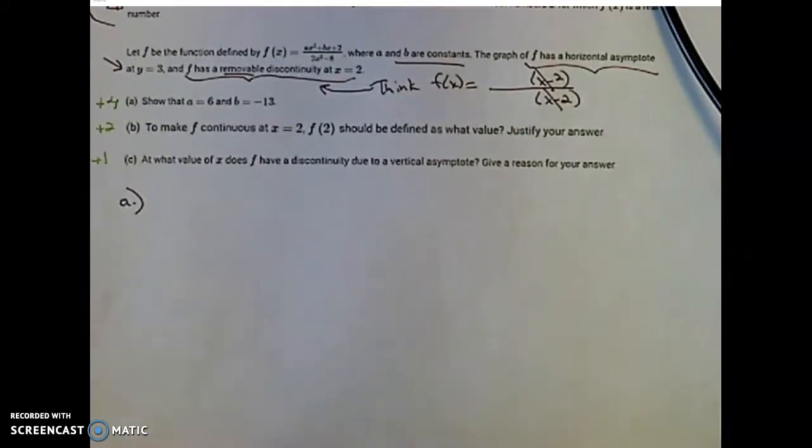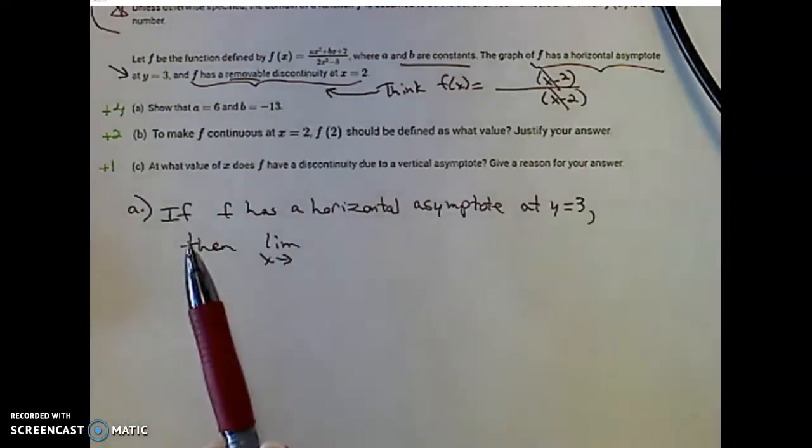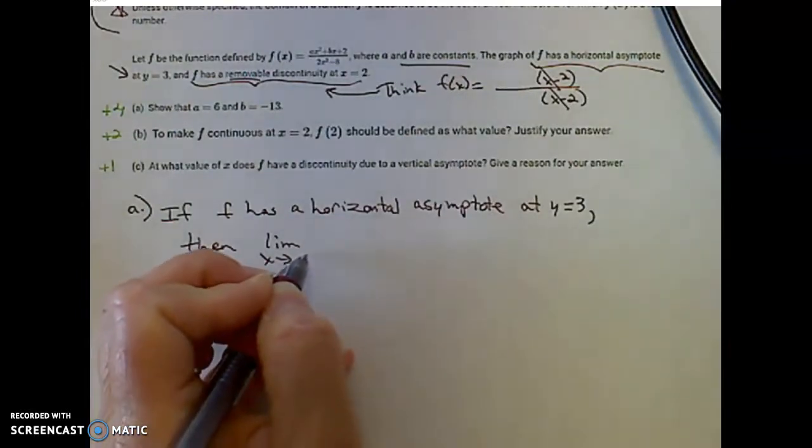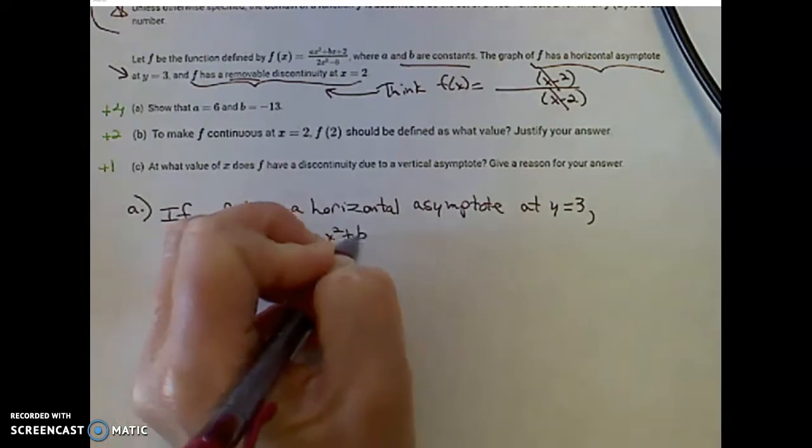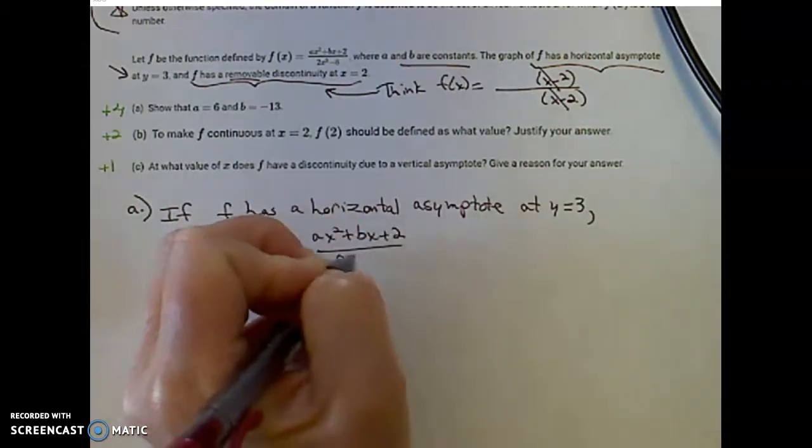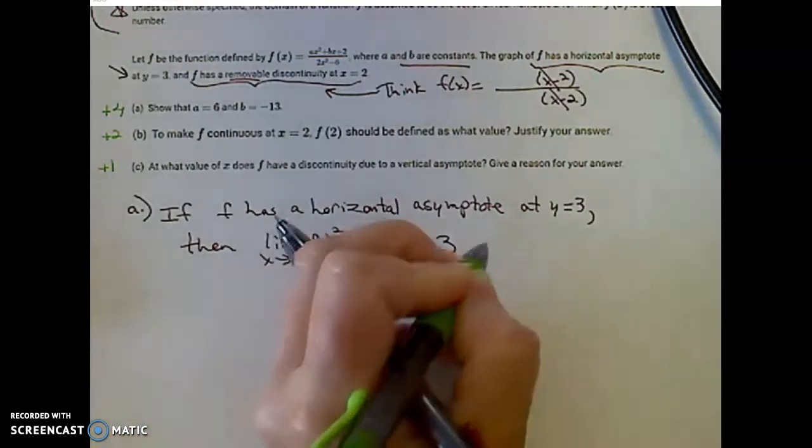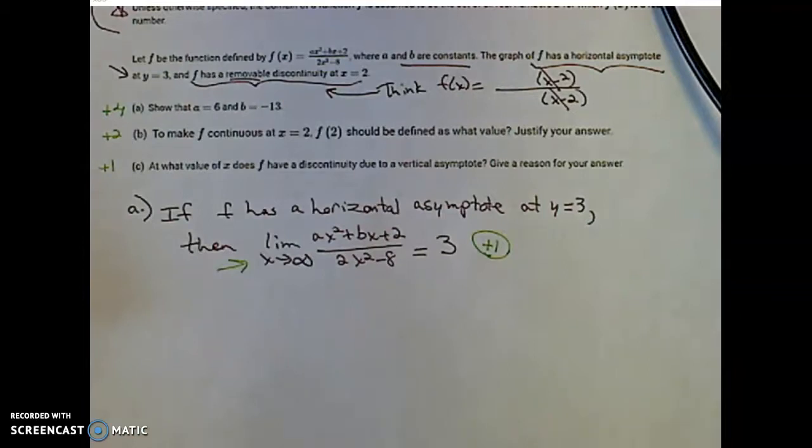Alright, let's look at Part A for this question. It was four points for Part A. They tell us what a and b are. Please show that a equals 6 and b equals negative 13. For the sake of time, this is how I would start Part A. If f has a horizontal asymptote at y equals 3, then the limit as x approaches infinity of that function, Ax squared plus bx plus 2 over 2x squared minus 8, would be equal to 3. You are given one point if you have this limit in your work. That's what that horizontal asymptote implies. That's the calculus of it.